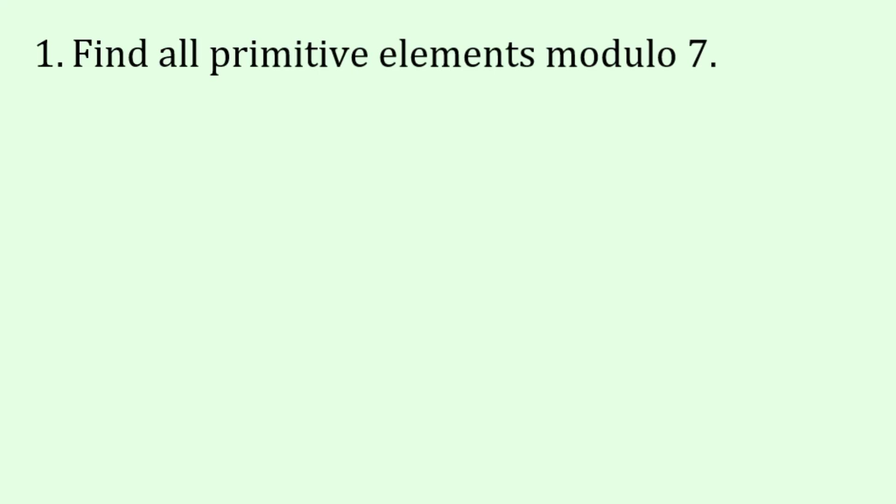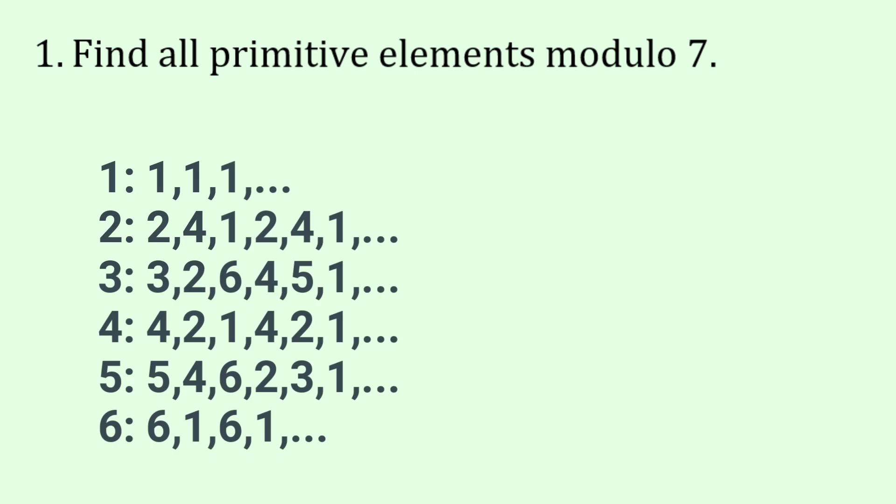Okay, so now we're ready to go to our first question. Find all primitive elements modulo 7. So what I've done in the first column there going down is write down the elements of Z star 7. And then I've raised all these numbers to different powers or increasing powers.